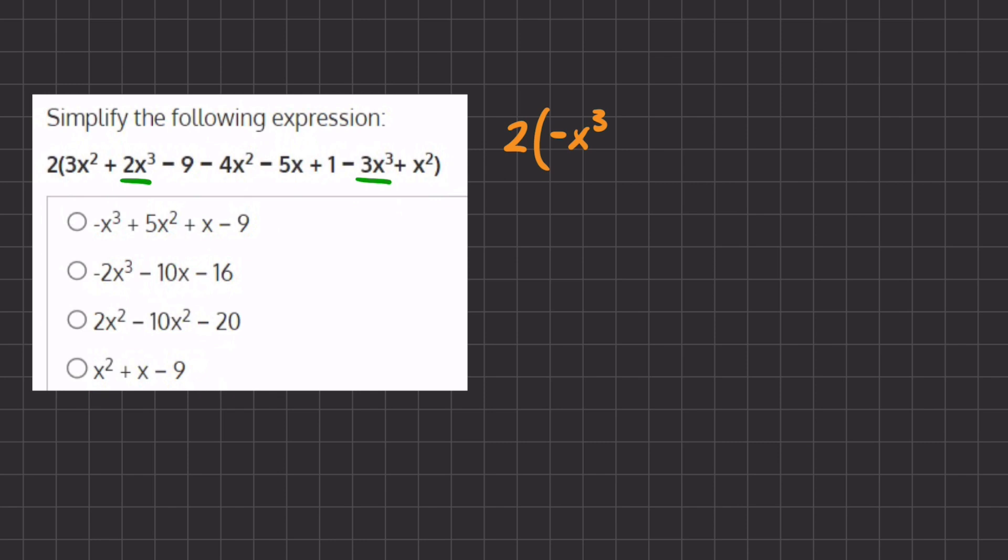So now let's move on to our next like term and that will be x to the power of 2. So we have 3x squared, negative 4x squared, and a positive x squared.